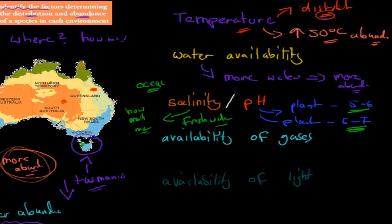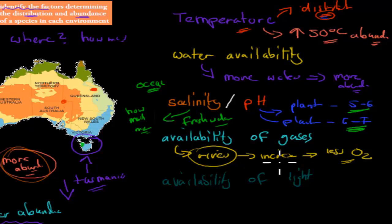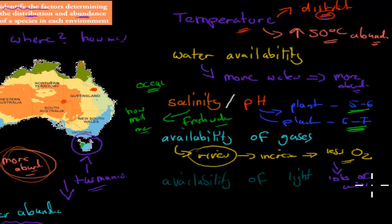Availability of gases is also important. For example, if you heat up a river — say through industrial waste — that increases the temperature, which decreases the dissolvability of oxygen. As soon as oxygen availability goes down in the river, lots of animals die, especially fish. So availability of gases is very important for both abundance and distribution. Oxygen is needed for all animals, and carbon dioxide is needed for all plants — the more you have, the more life you'll find.